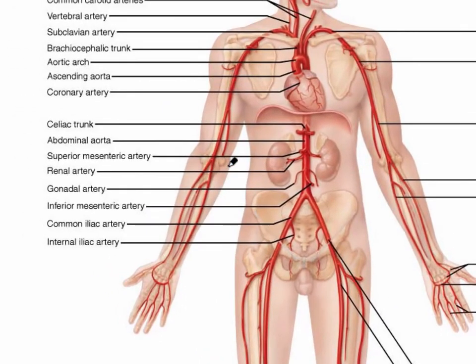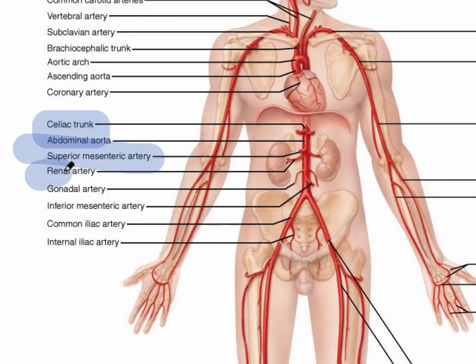Zooming in on the abdominal aorta and its branches — this will help you for lab as well. You need to remember these five main branches in order: the celiac trunk first; then the superior mesenteric artery, delivering blood to the proximal end of the intestines; then the renal artery; the gonadal artery — testicular in men, ovarian in women; and then the inferior mesenteric artery, delivering blood to the last part of the digestive system.